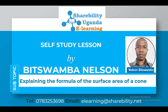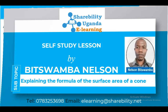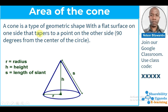First of all, what is a cone? A cone is a type of geometric shape with a flat surface on one side that tapers to a point on the other side. It forms a 90 degree angle from the center.